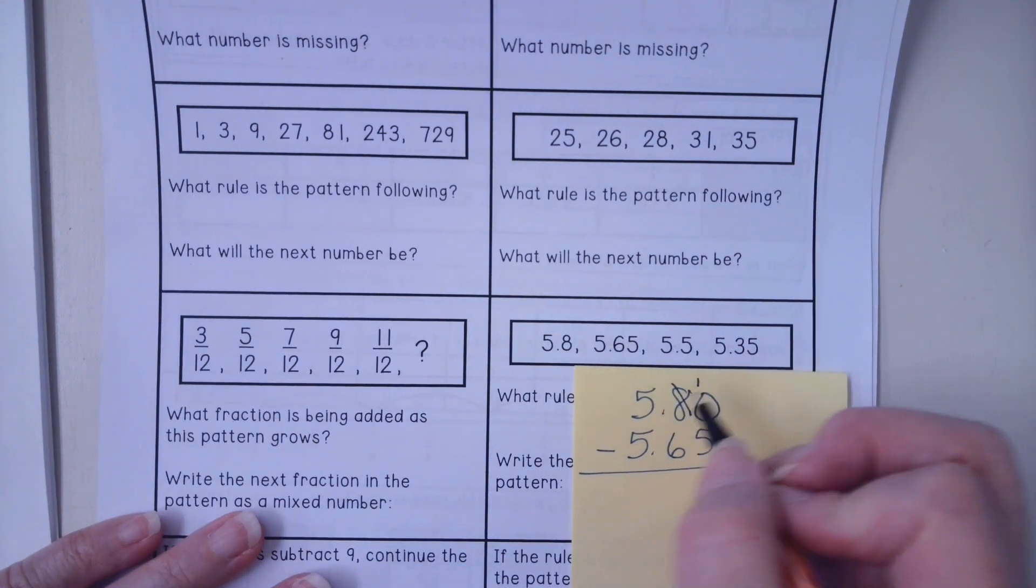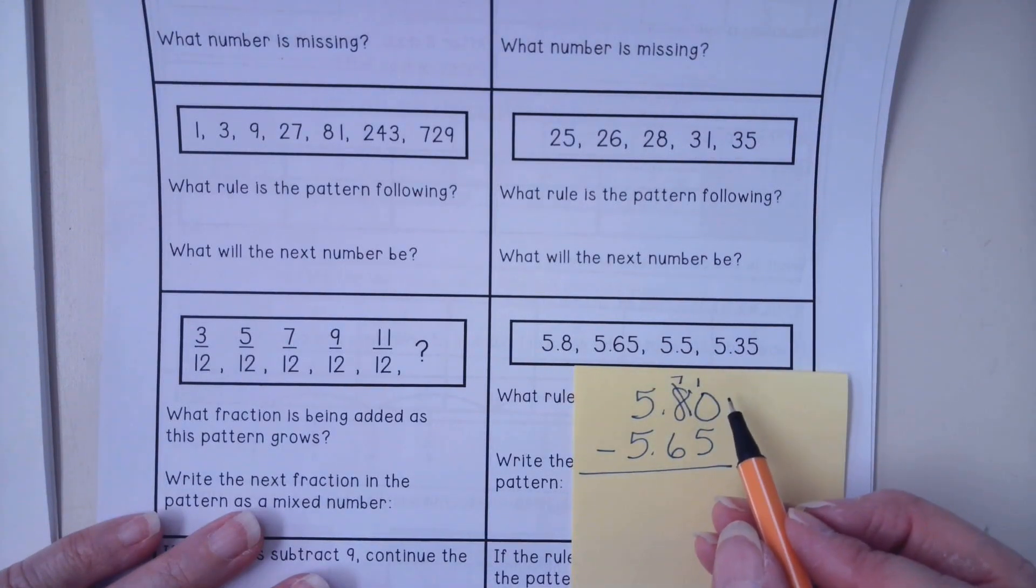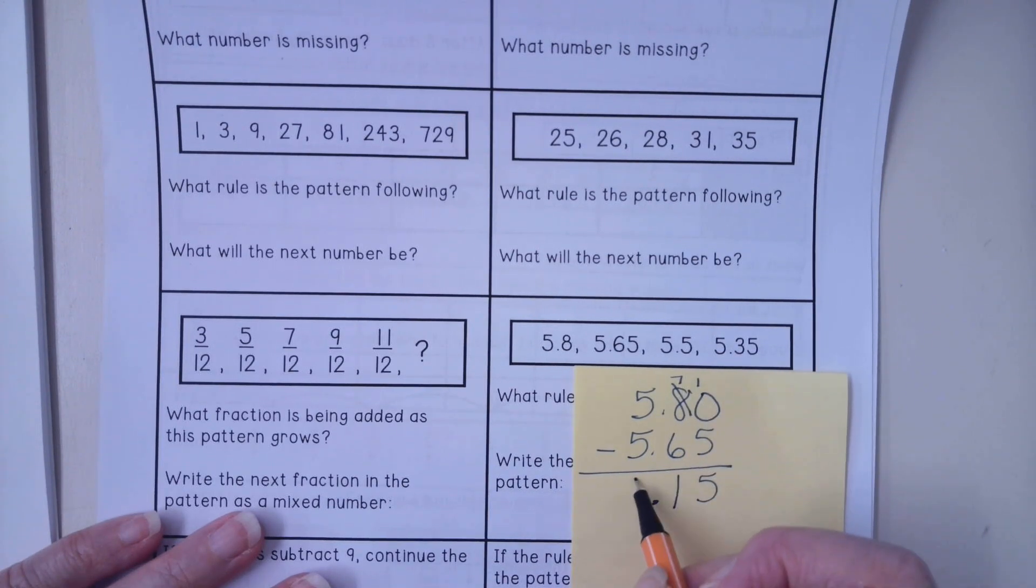I will have to borrow and carry and do all that fun stuff here. So 10 minus 5 is 5, 7 minus 6 is 1 and then I have a zero.